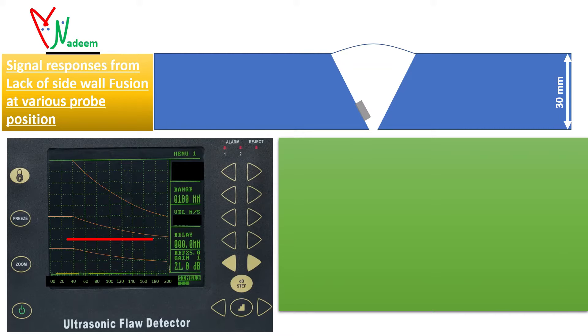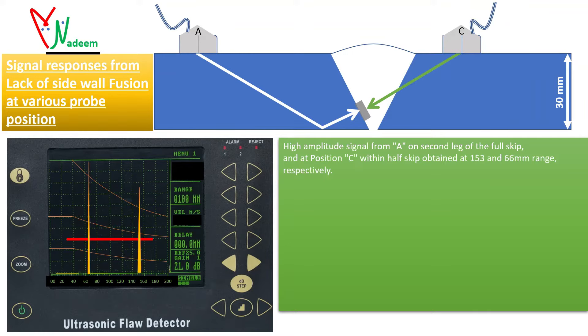Now we will evaluate the amplitude response of the lack of sidewall fusion with respect to various probe positions. Here we can see the high amplitude signal from A on second leg of the full skip and at position C within the half skip obtained at 153 mm and 66 mm range respectively. At both positions A and C the sound beam is hitting at the middle of the defect.